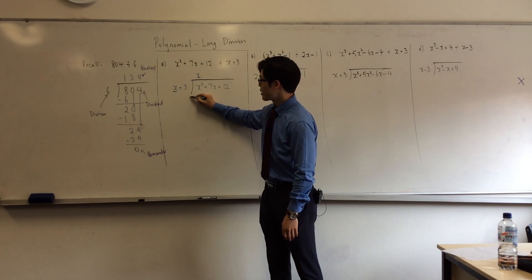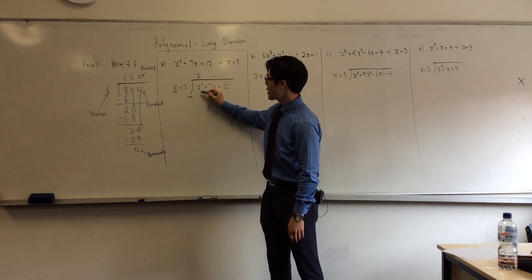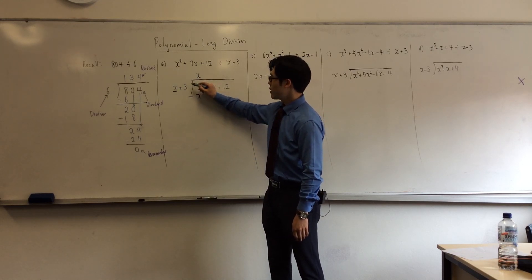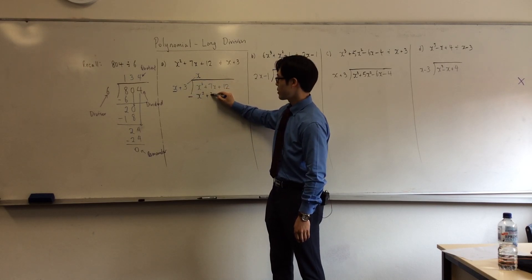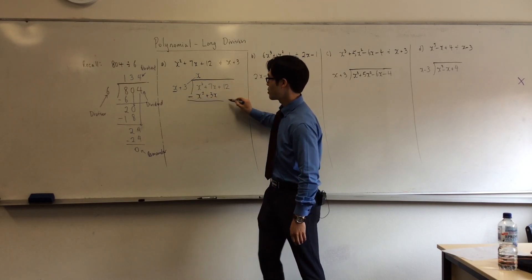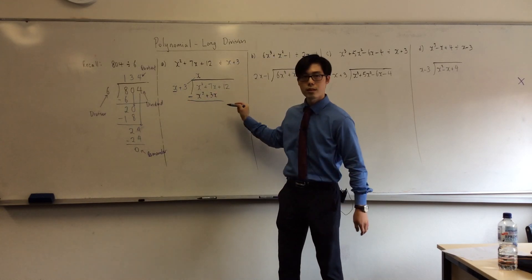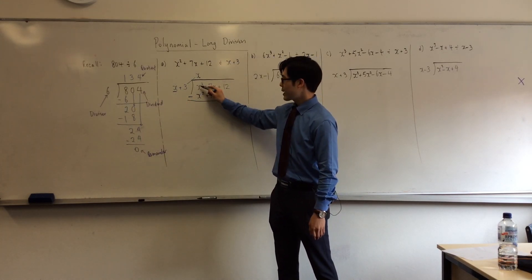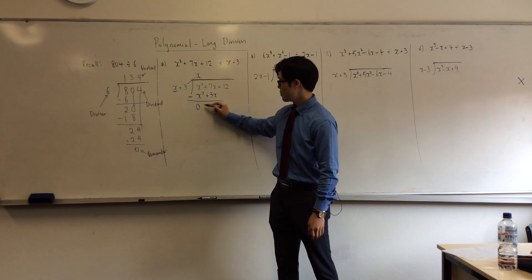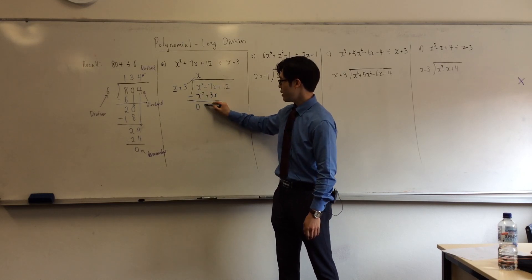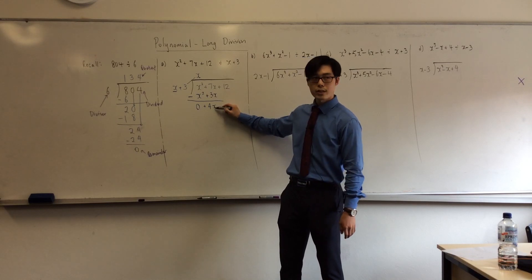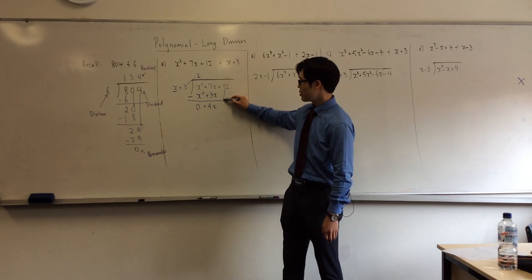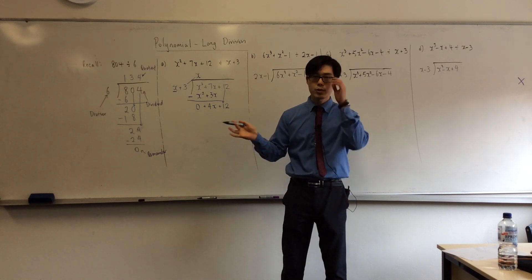Now, to do the remainder, you always take away. So x times x is x squared. You also have to times the second term as well: 3 times x is plus 3x. This is how you set it up — this is the line we're doing here.